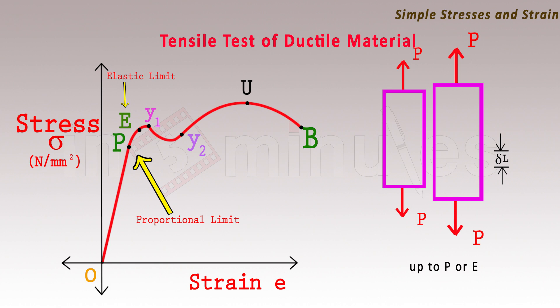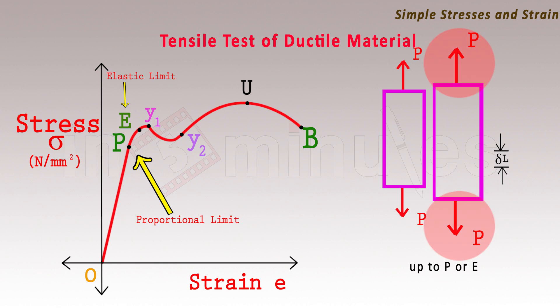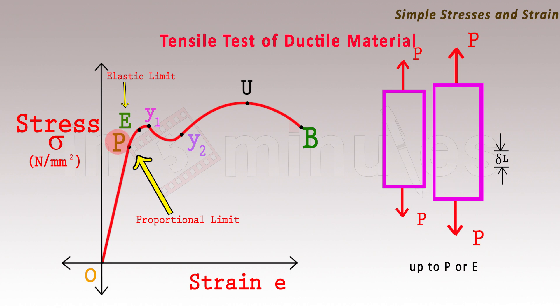This behaviour continues up to a point called as the proportional limit. Beyond that is a small region up to point E where the material still exists in an elastic state, but the stress and strain are no longer linear. Point E is called as the elastic limit.